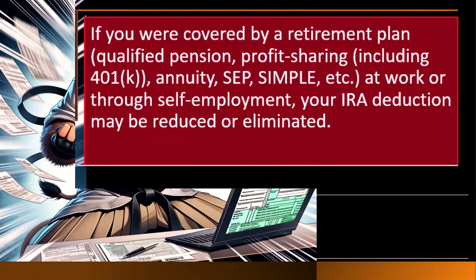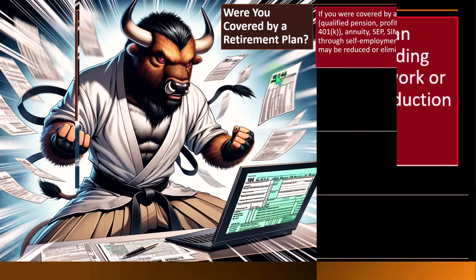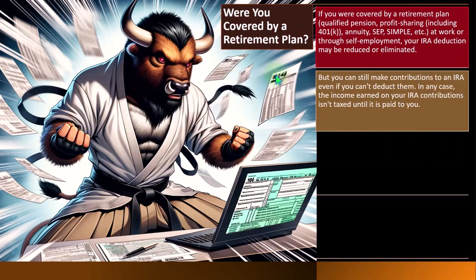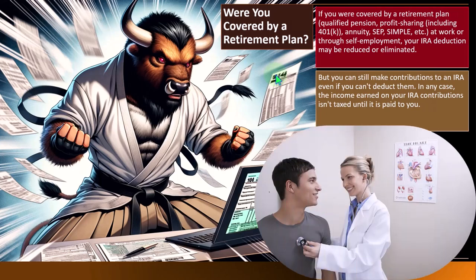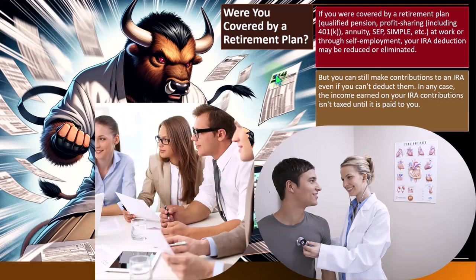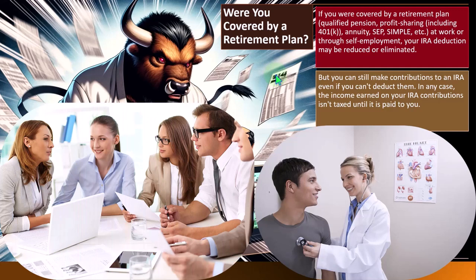If you were covered by a retirement plan — qualified pension, profit sharing including 401k, annuity, SEP, SIMPLE, etc. — at work or through self-employment, your IRA deduction may be reduced or eliminated. This makes sense because the IRA was set up similarly to how the 401k was historically set up for people spending their whole career at one company.